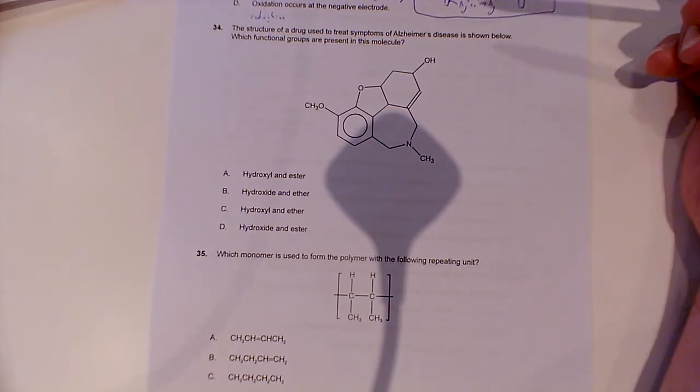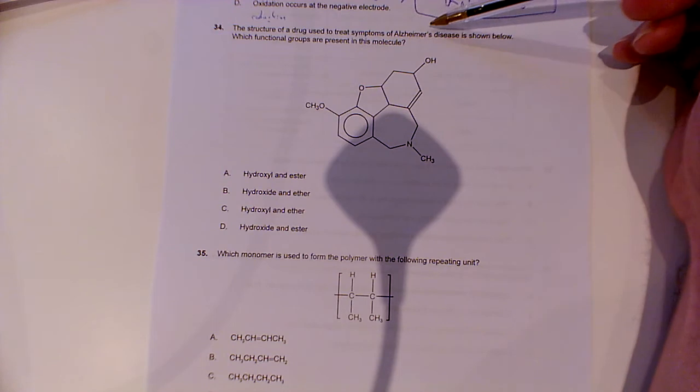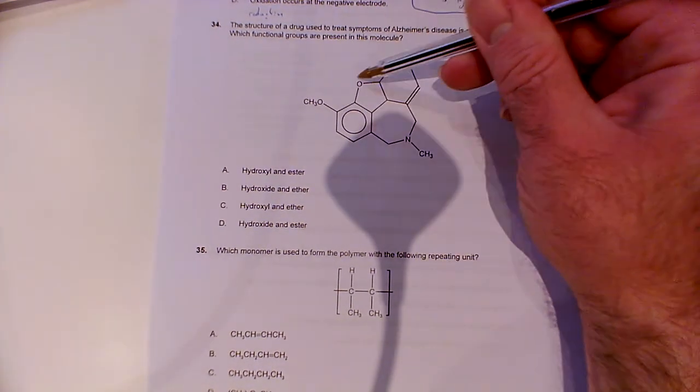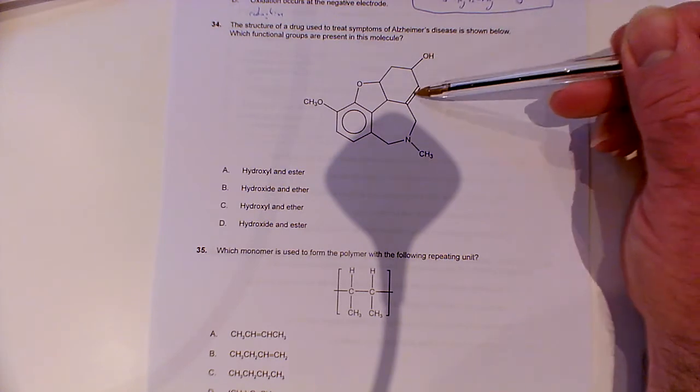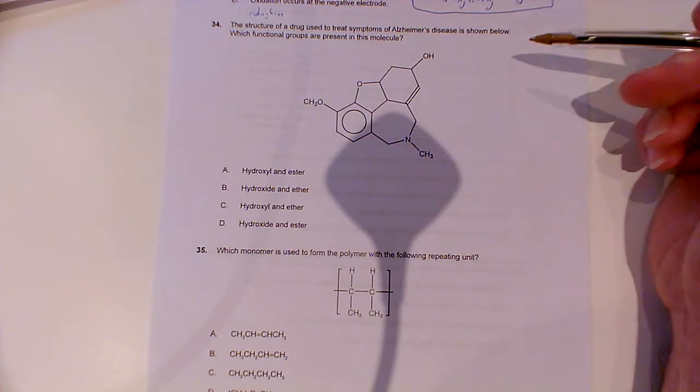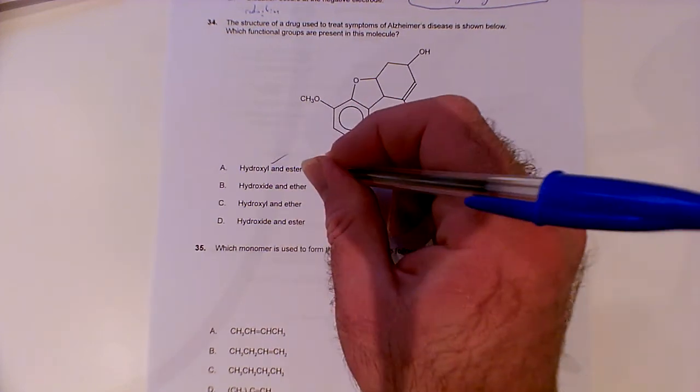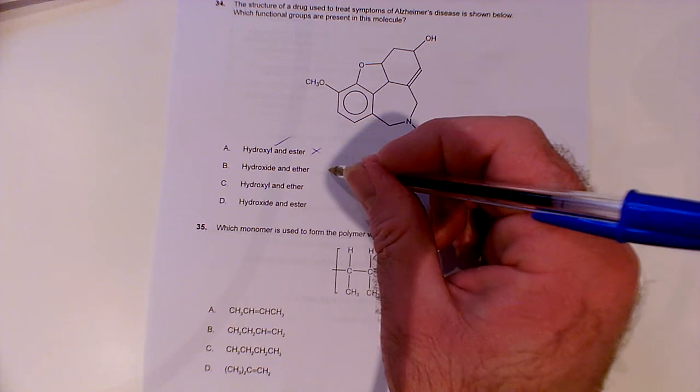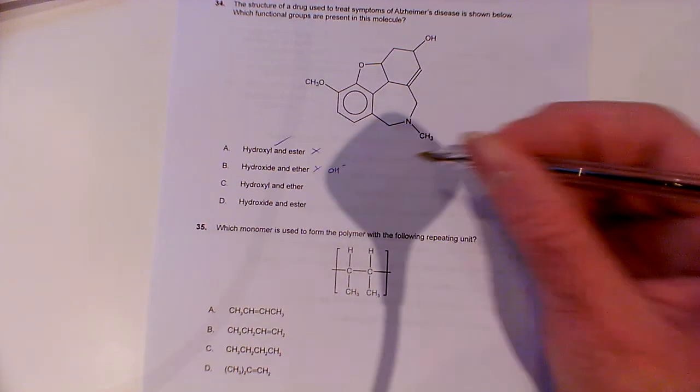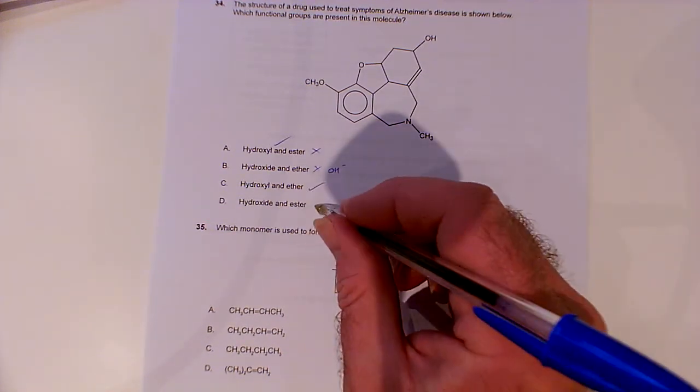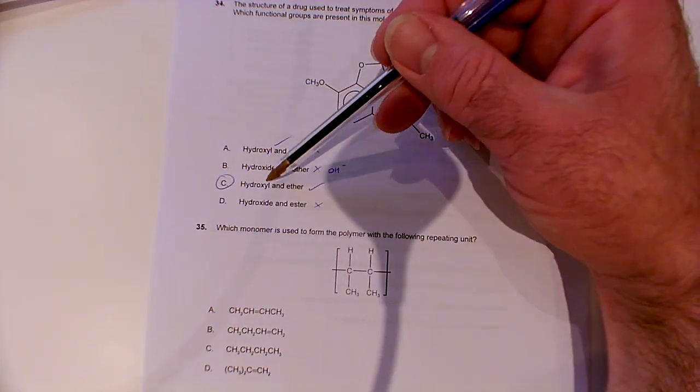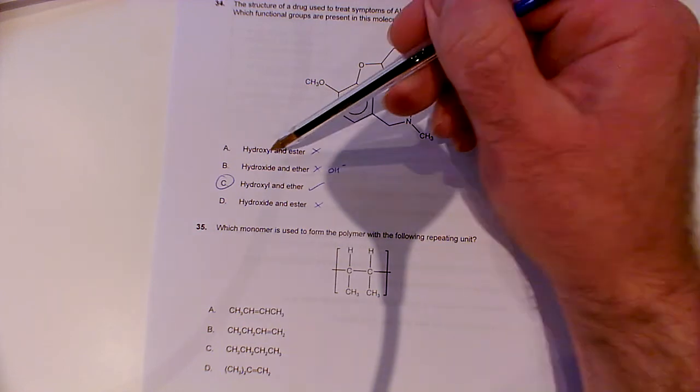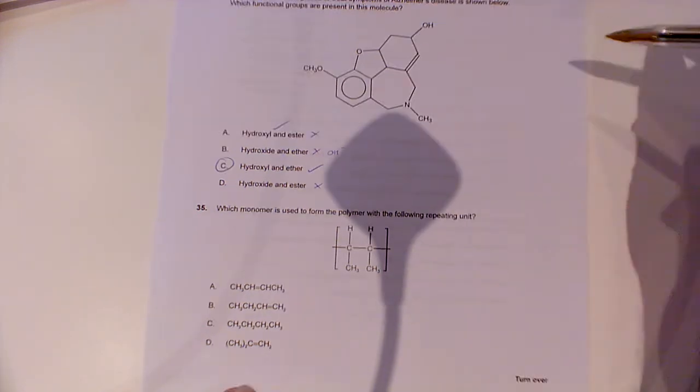Question 34. Into the final straight now. Organic chemistry. The structure of a drug used to treat symptoms of Alzheimer's disease is shown below. Which functional groups are present in this molecule? We've got two ethers, a hydroxyl group, an alkene, an amine, and a phenyl ring. Hydroxyl and ester. Well, we've got a hydroxyl, but we don't have an ester. Hydroxide and ether. Hydroxide doesn't sound too bad, but hydroxide, remember, is OH-. So I don't want to go with that. Hydroxyl and ether, that looks good. They're trying to catch you out there. Hydroxyl is the technical name for the alcohol functional group, not hydroxide, which is actually the ion, OH-.